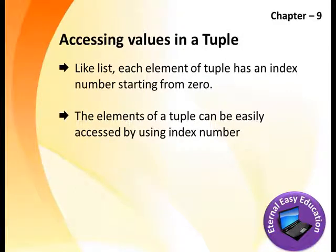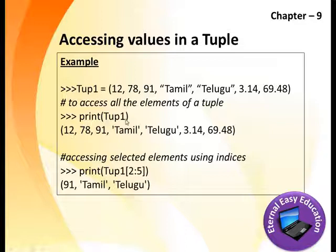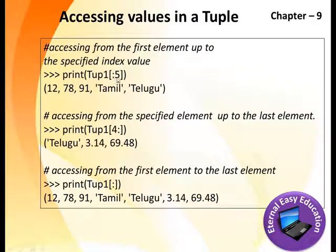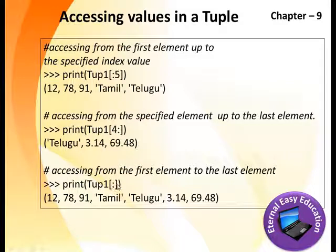After creating a tuple, how to access the values: like a list, each element of a tuple has an index number starting from 0. Elements can be easily accessed using the index number. Using print, you can get values directly. You can also use slicing — for example, print(tuple[2:5]) gives elements at indices 2, 3, 4. If starting index is not given, it defaults to 0; if ending is not given, it goes to the end of the tuple.